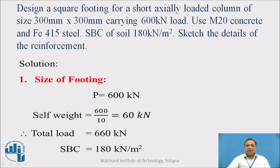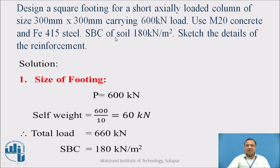This is the design example. Design a square footing for a short axially loaded column of size 300 mm by 300 mm carrying 600 kN load. Use M20 concrete and Fe415 steel. The safe bearing capacity of the soil is 180 kN per meter square. Sketch the details of the reinforcement.